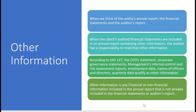You might be wondering what's included in the term 'other information.' According to SAS 137, the CEO's statement, corporate governance statements — these are what we call other information. You might have management's internal control and risk assessment reports, or some employment data, names of officers and directors, quarterly data. This is what qualifies as other information.